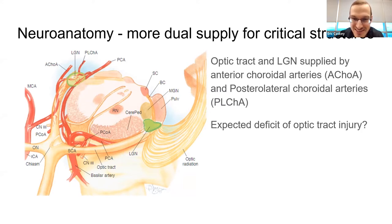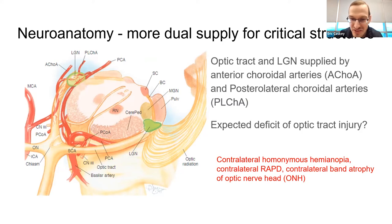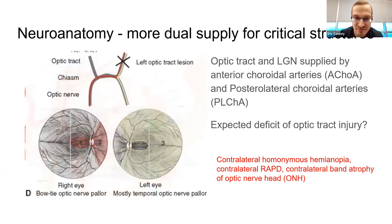We'll have some questions for feedback so you don't fall asleep. The expected deficit of optic tract injury — this one's too easy. You'll have contralateral homonymous hemianopia, contralateral RAPD, and contralateral band atrophy of the optic nerve, as you can see on this diagram.